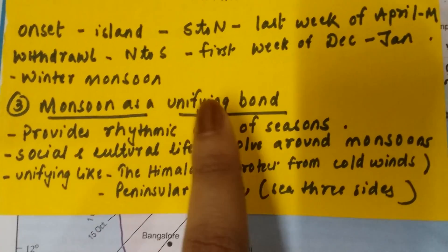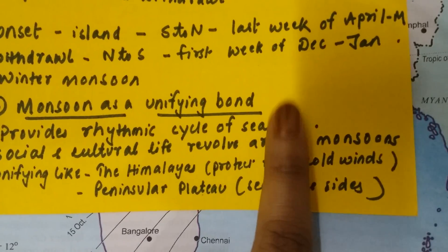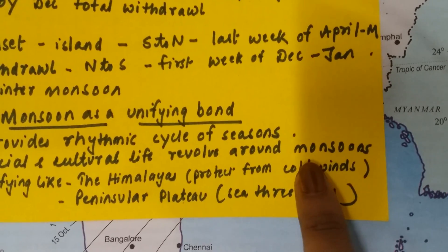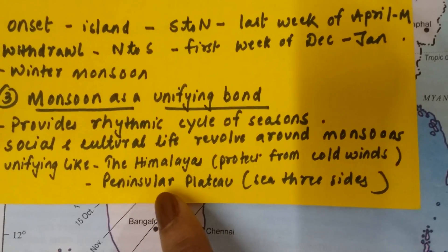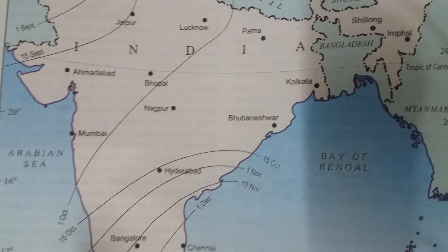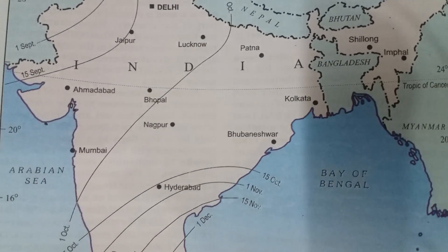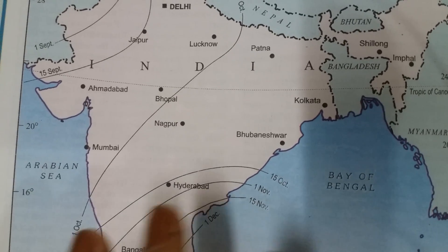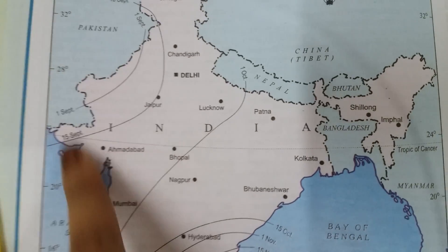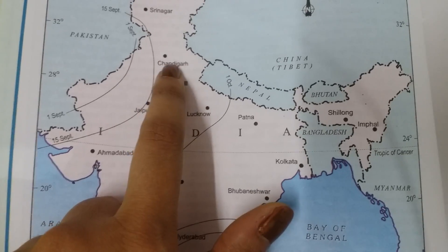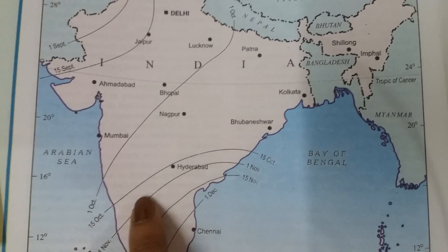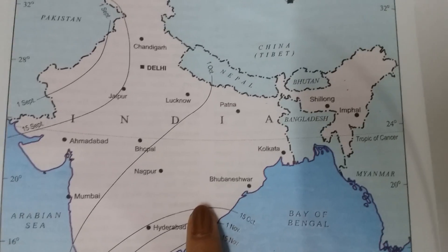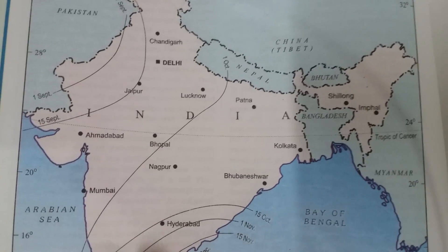Is monsoon the only unifying bond? No. There are other unifying bonds as well — like the Himalayas, which protect us from extreme cold winds and bring a warm temperature because of their tall height. The second is the Peninsular Plateau, where because there is water on three sides, there is a moderate temperature. Monsoon is a unifying factor because it gives a similar pattern of four seasons throughout the country — there may be highs and lows, but the four seasons remain very constant.